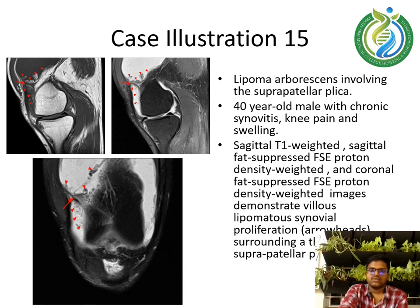Case illustration 15: lipoma arborescens involving the suprapatellar plicae. A 40-year-old male with chronic knee pain and swelling. Sagittal T1-weighted, sagittal fat-suppressed FSE proton density weighted, and coronal fat-suppressed FSE proton density weighted images demonstrate multiple intermediate to low signal masses in the suprapatellar bursa, shown by the asterisk.